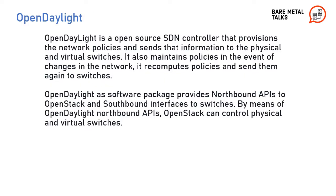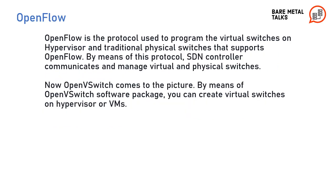OpenDaylight is an open source SDN controller that provisions network policies and sends that information to physical and virtual switches. It also maintains policies — in the event of a change in the network, it recomputes those policies and sends them again to the switches. OpenDaylight, as a software package, provides northbound APIs to OpenStack and southbound interfaces to the switches. By means of OpenDaylight's northbound APIs, OpenStack can control physical and virtual switches. If you go back to the SDN high-level view, you will see the interface between the control and infrastructure layer, where the OpenFlow protocol is introduced.